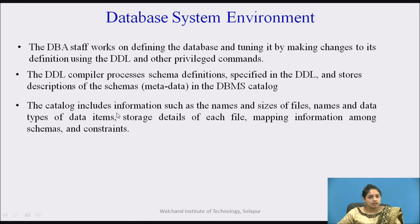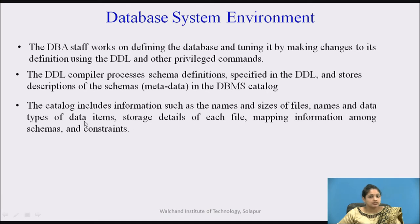The DDL compiler processes schema definitions described in the DDL and stores the description of the schema — the metadata — into the DBMS catalog. The catalog includes information such as names, size of files, names and data types of data items, storage details of each file, mapping information among schemas, and constraints.